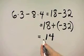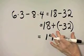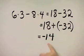Then remember we attach the sign of the number with a larger absolute value. This number has the larger absolute value. It's negative. So we have negative 14. This simplifies to negative 14.